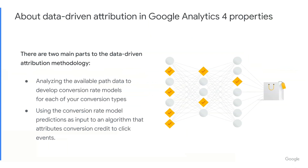There are two main parts to the data-driven attribution methodology. The first part is analyzing the available path data to develop conversion rate models for each of your conversion types. Data-driven attribution uses data from both converting and non-converting paths. For example, the paths that clicked on an ad, viewed a product, and purchased versus the paths that clicked on ads but did not ultimately purchase. It uses this data to understand how the presence and timing of particular marketing touchpoints may impact your users' probability of conversion.